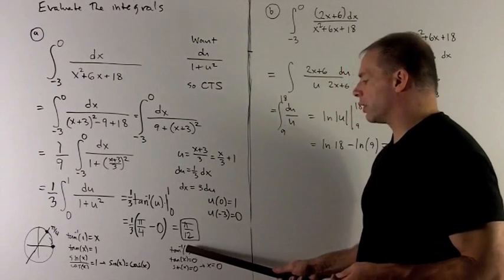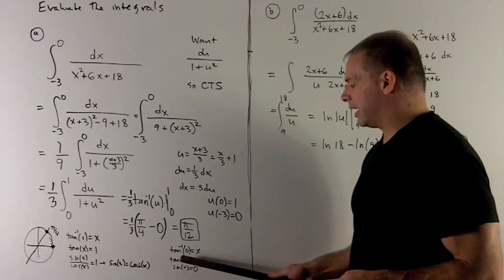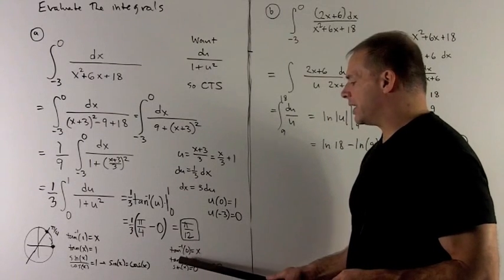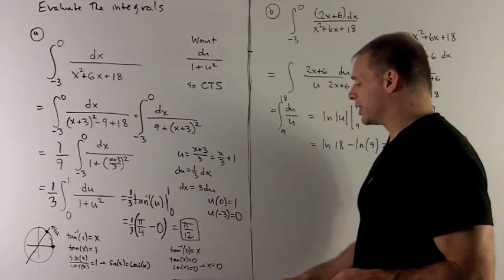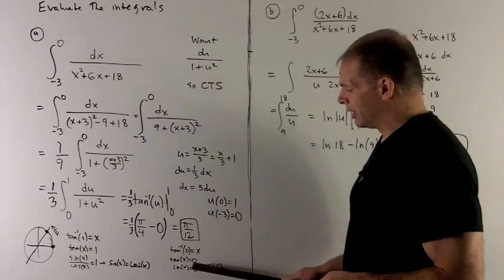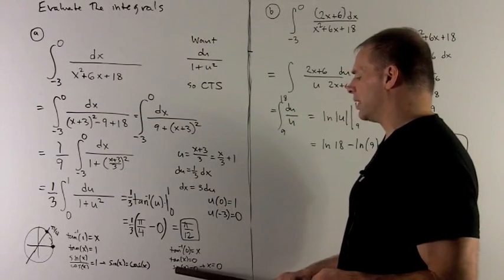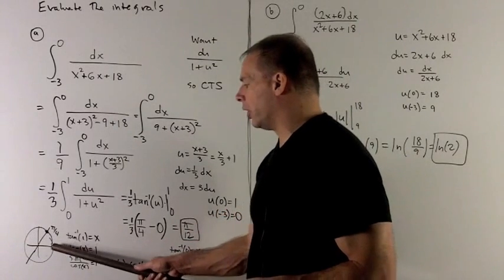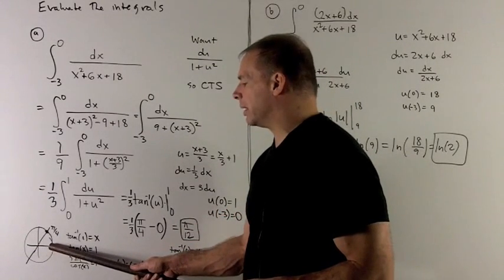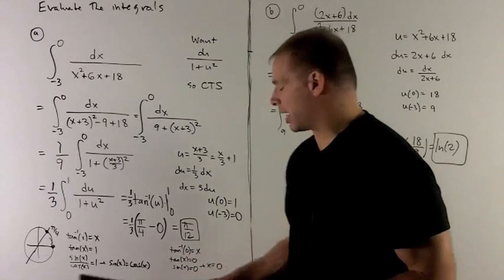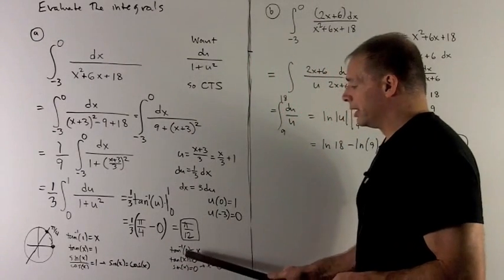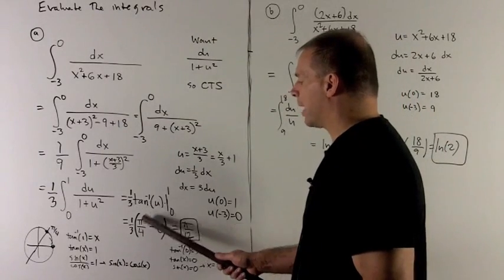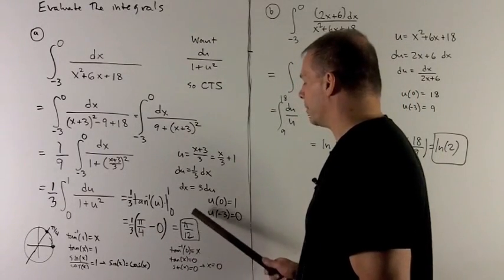For tan inverse of 0, okay we set that equal to x. Tan of x is equal to 0. We just rewrite it. Well tan is equal to sine over cosine. So the cosine I could just multiply over, clear the denominator, and that leads me with sine of x equal to 0. Okay, well sine is the y value on the unit circle. The way I get the height equal to 0 is by being at the angle 0 itself. So tan inverse of 0 is equal to 0. So we're looking at one-thirds pi fourths minus 0, which is pi twelfths.